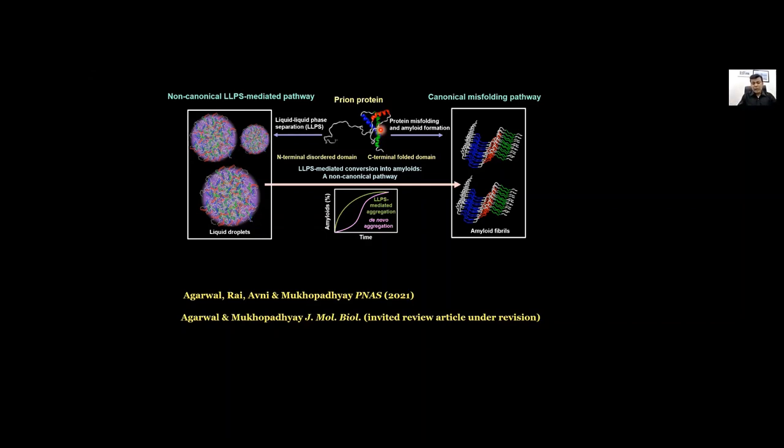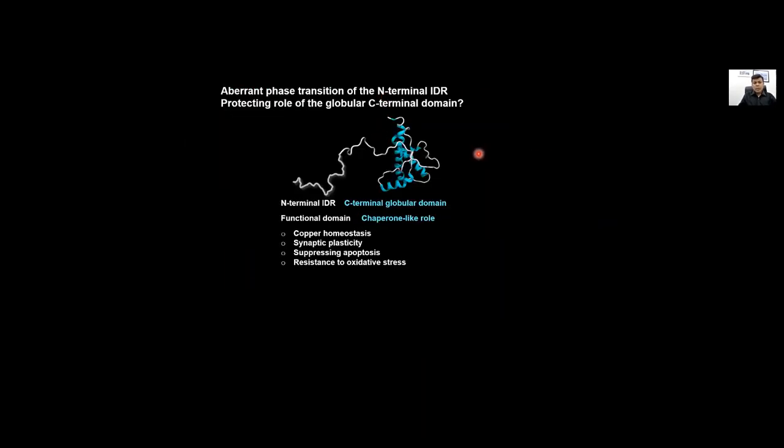To summarize again, the N-terminal IDR is the functional domain. At least most of the putative functions like copper homeostasis, synaptic plasticity, suppressing apoptosis, resistance to oxidative stress are all concentrated in the intrinsically disordered domain or the repeat domain which is the copper binding domain. On the C-terminal domain we ask this question: whether this can be a chaperone-like domain which is preventing the N-terminal domain from phase separating and performing its function, which of course we don't know the exact function but maybe this part is important. And of course there is GPI anchor which is attached at the end of the C-terminal domain which places the protein at the cell surface.